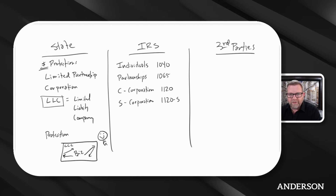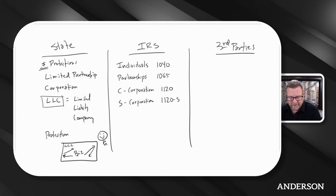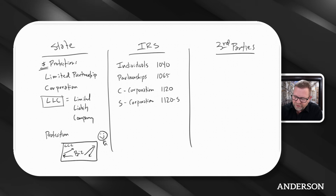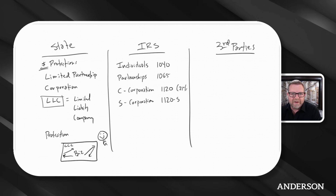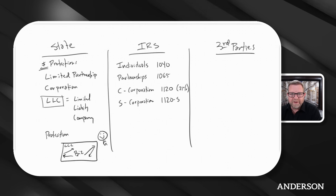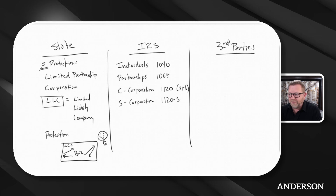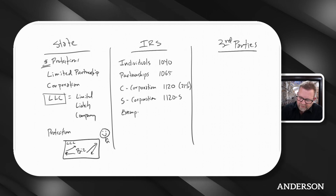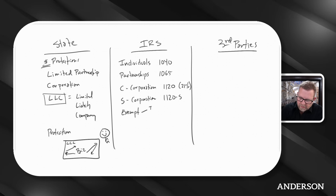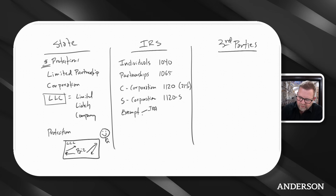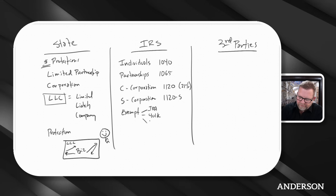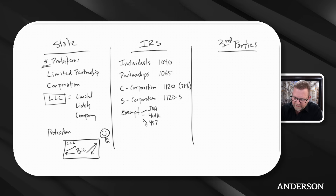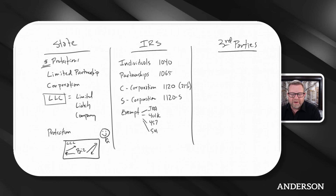People will generally call a plain vanilla corporation a C corp, and they'll call it an S corp. Corporations are taxed at 21% on their net income. S corporations flow income down to the shareholders. There are also exempt organizations we're all familiar with — IRAs, 401ks, 457s, even 501s. You're probably familiar with 501c3s — those are exempt. And then you have trusts, which file a 1041.